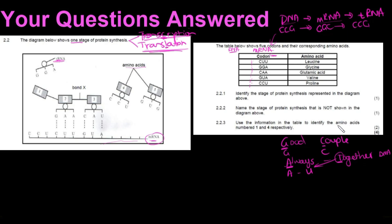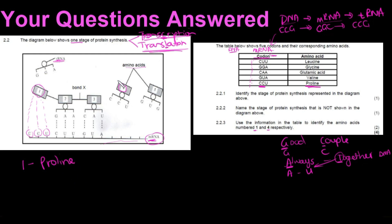Question 2 asks us to use the table to identify amino acids numbered 1 and 4. To get the amino acid we need the codon. For number 1 — the easiest one — since numbers 2 and 3 are shown bonded, number 1 would fit in the first slot on the mRNA strand. The codon is CCU. We read nitrogenous bases in threes. Looking up CCU in the table, the amino acid is proline. So number 1 is proline.